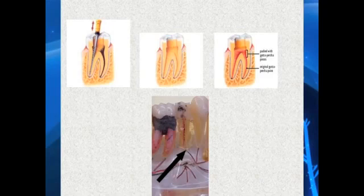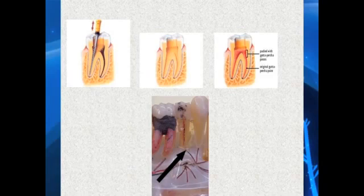Your primary care physician may pick this up in your blood work. If he sees that your neutrophils are slightly elevated and the lymphocytes are slightly depressed, that means you could have a chronic low-grade infection, or your white blood cell count may be too high or too low. That seems to be the main problem with the caulking material.